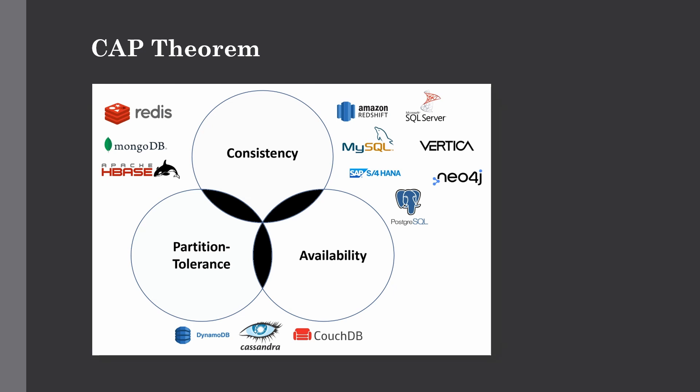If you need a consistent system with consistent results from your application, you should choose HBase, MongoDB, or Redis. The CAP theorem tells us you cannot have all features in your database — you can only choose two, and for big data you should stick to the partition-tolerance side of the triangle. If an interviewer asks you to choose a database for a certain use case, you can easily answer that by applying the CAP theorem.